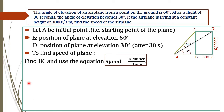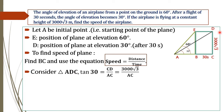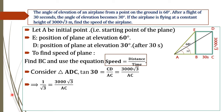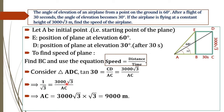For finding BC, consider triangle ADC. tan 30° equals opposite side over adjacent side, which is CD divided by AC. That is, tan 30° equals 3000 root 3 divided by AC. Substituting the value of tan 30° as 1 over root 3, we get 1 over root 3 equals 3000 root 3 over AC. By cross multiplying, AC equals 3000 root 3 times root 3, which equals 9000 meters.